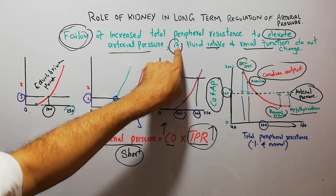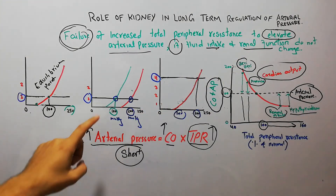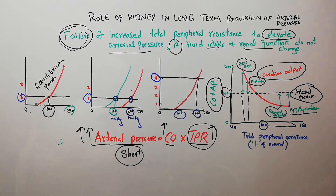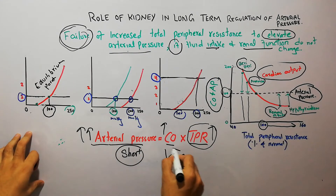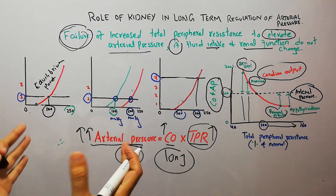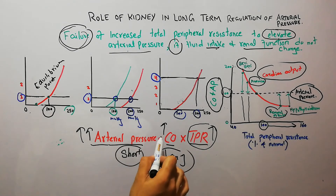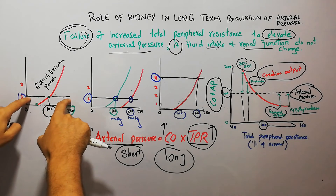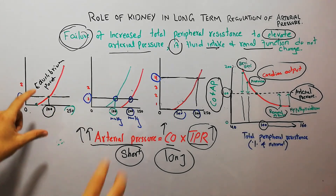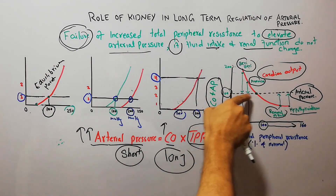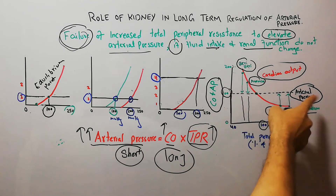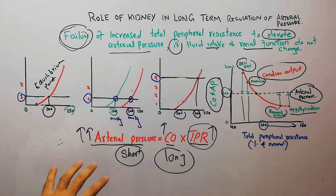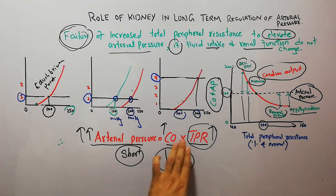The purpose of this lecture is to demonstrate the failure of increased total peripheral resistance to elevate arterial pressure if fluid intake and renal functions do not change. If renal functions and fluid intake do not change, there will be no change in arterial pressure in the long run. In the short run, there will be a change if total peripheral resistance or cardiac output increases, but in the long run, if intake and the renal function curve remain the same, arterial pressure will not change. Cardiac output may change, but arterial pressure will remain the same.